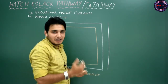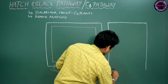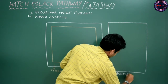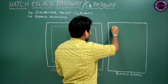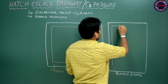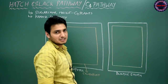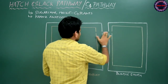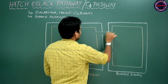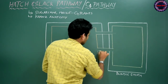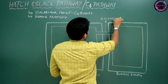This distinct arrangement is called Kranz anatomy, a different type of anatomy seen only in C4 plants. The number of chloroplasts is greater in the bundle sheath cells compared to the mesophyll cell. The mesophyll and bundle sheath cells are connected by plasmodesmata, which connect neighboring cells.